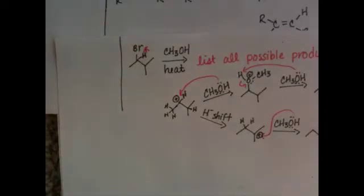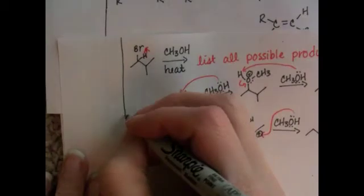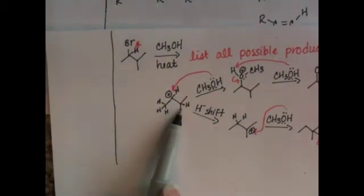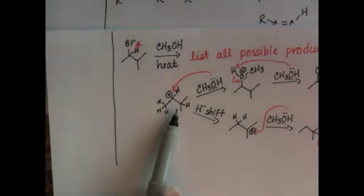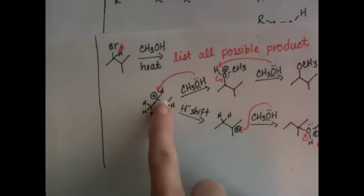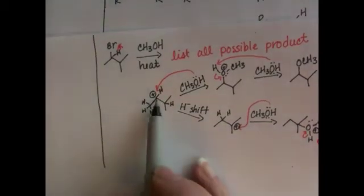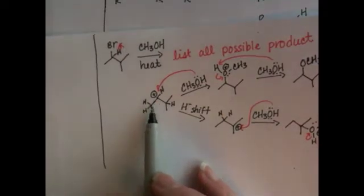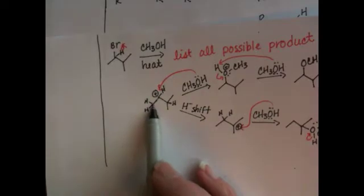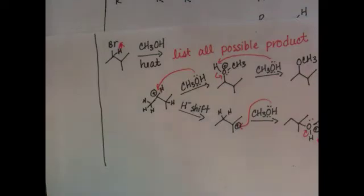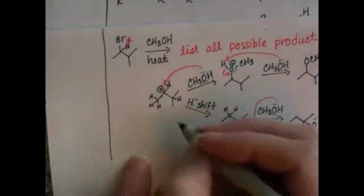Okay, so now what we need to do is consider the elimination products for this mechanism. All the elimination products go back to the carbocation because they all start by the formation of the carbocation. When we're trying to determine the elimination products, we need to realize that in elimination we are going to abstract a hydrogen from a carbon adjacent to the positive charge. So we're going to pull a hydrogen off from this carbon or pull a hydrogen off from this carbon, and again that's going to happen with the methanol.